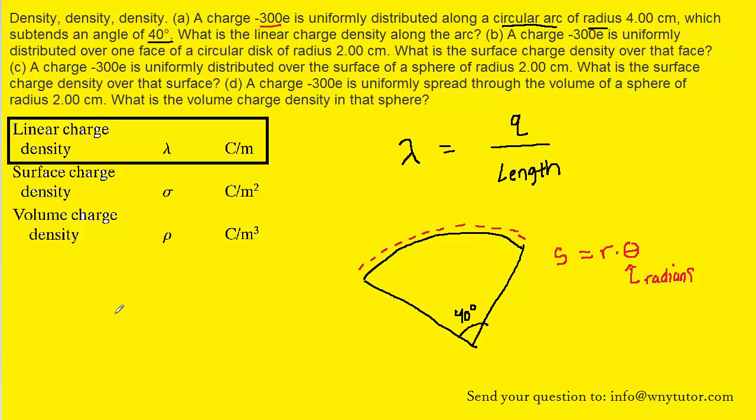And of course, they gave it to us in degrees. So why don't we actually come over here on the side and convert 40 degrees into radians. We know that there are pi radians in 180 degrees. So if we multiply the numerators here, we're going to end up with 40 pi over 180.